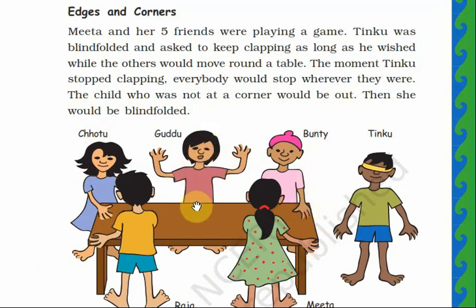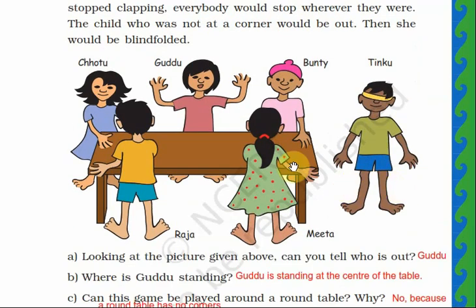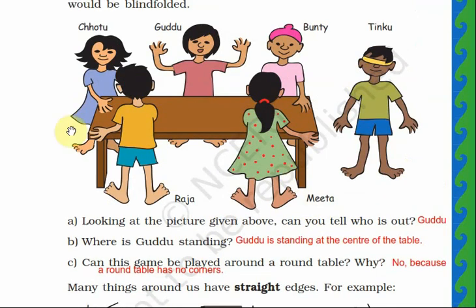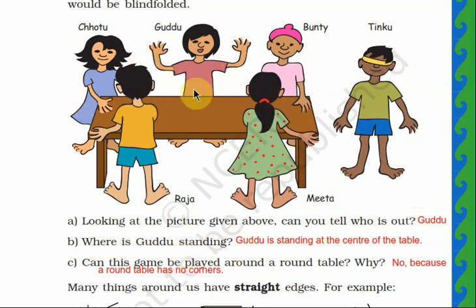So these four children — Chotu, Raja, Mita, and Bandi — are standing at the corners. But Guddu has not reached the corner, so she is out of the game. Now she will be blindfolded and Tingu will come back into the game. Who is out? Guddu is out of the game because he is not at the corner of the table. Where is Guddu standing? Guddu is standing at the center of the table.